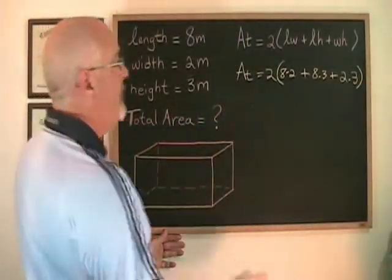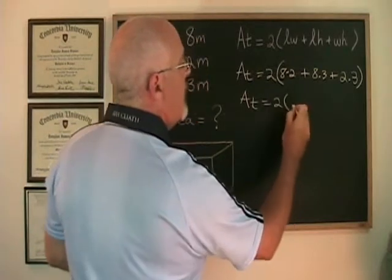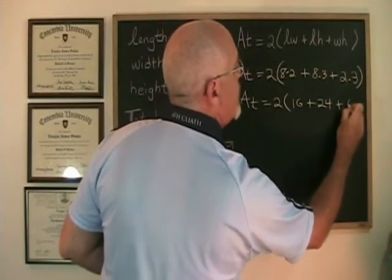Now let's simplify. 8 times 2 is 16, 8 times 3 is 24, 2 times 3 is 6.